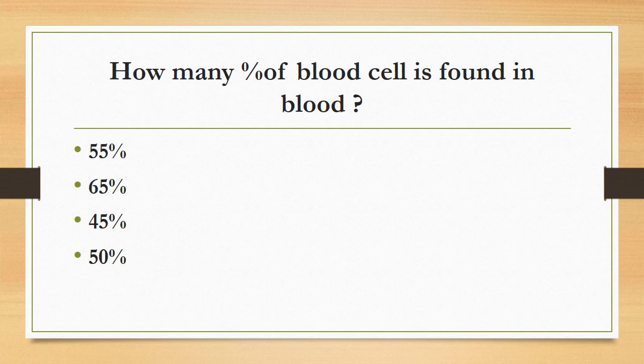How many percent of blood cells are found in blood? 55%, 65%, 45%, or 50%? The correct answer is 45%. Blood is composed of 45% blood cells.